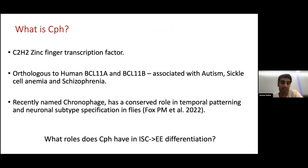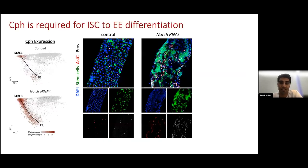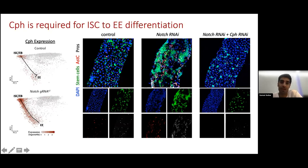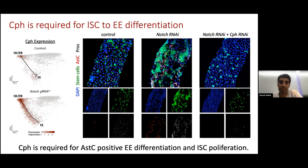To understand what roles CPH has in ISC-to-EE differentiation, we studied the genetic interaction between notch and CPH. As expected, when we knocked down notch with RNAi, we saw a massive expansion of the stem cell population, shown in green, but also an expansion of the enteroendocrine cells positive for the neuropeptide allatostatin C, which are labeled here. When we simultaneously knocked down notch and CPH, we could completely rescue this phenotype and revert it back to a wild-type scenario, suggesting that CPH is required for enteroendocrine cell generation and stem cell proliferation during low notch signaling.